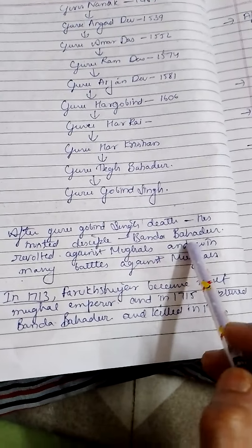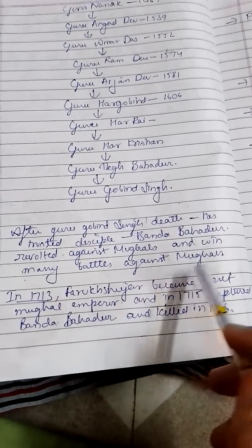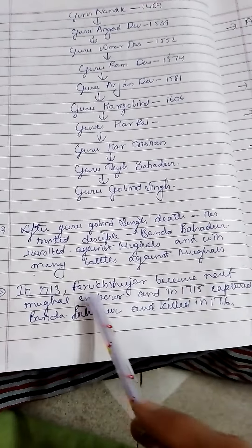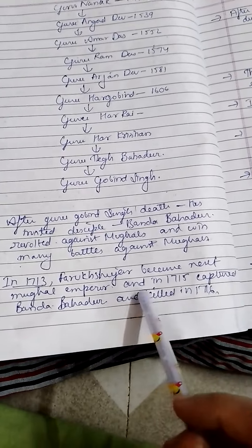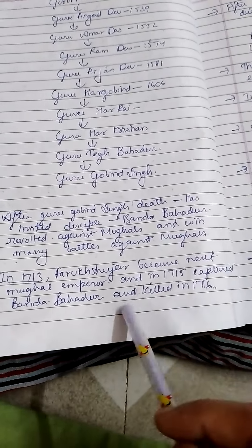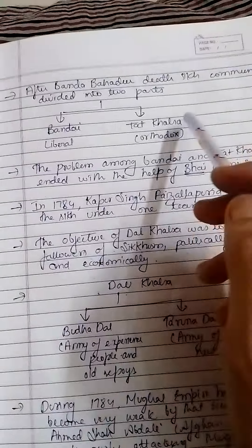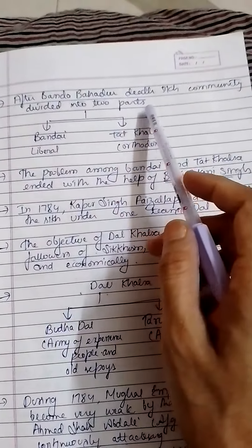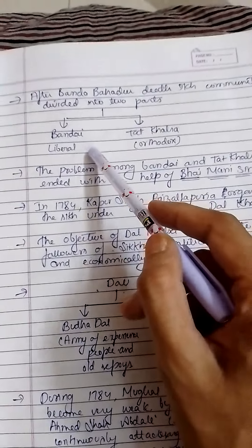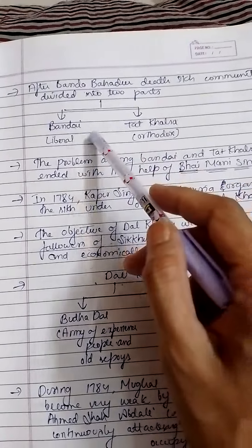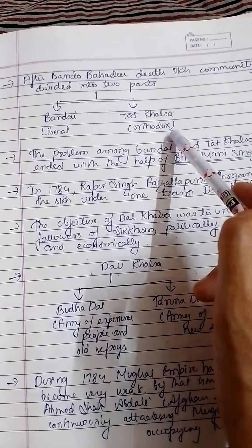After Guru Gobind Singh, his trusted disciple Banda Bahadur carried on with many revolts and battles. In 1715, Banda Bahadur was captured and killed by the Mughals. After his death, the Sikh community was divided into two parts: the Bandai, who were liberal, and the Tat Khalsa, who were orthodox.